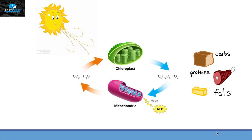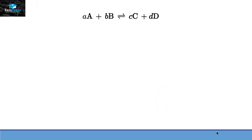In order to understand free energy, let's take a general equation. We have reactants A and B which make products C and D. This is a two-way reaction, so C and D can also make A and B. At the start of the reaction, the concentration of A and B will be higher and C and D will be lower. As the reaction proceeds, A and B go down and C and D go up, until they reach a point where no further reaction proceeds — that point is called equilibrium.